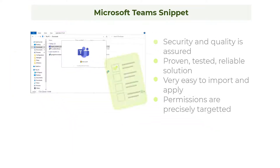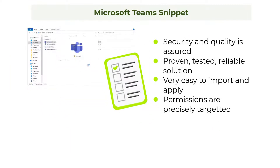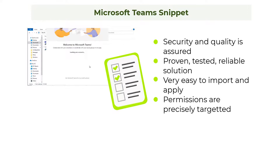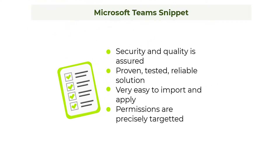With this snippet, security remains assured — the items allowed are Microsoft trusted. Guesswork is removed. As an admin, you don't need to investigate all the required executables and other component files that must be enabled; the snippet delivers a complete solution. You don't have to know which files go where or the best way to create rules within your config, and users who require access to Teams are provided with the permissions they need and only the permissions they need.